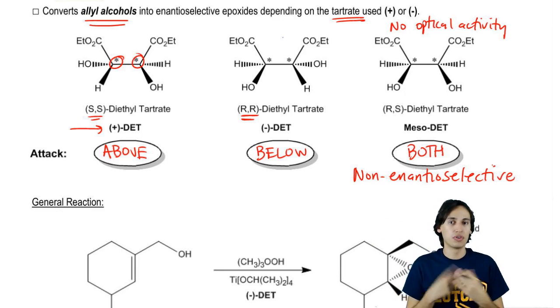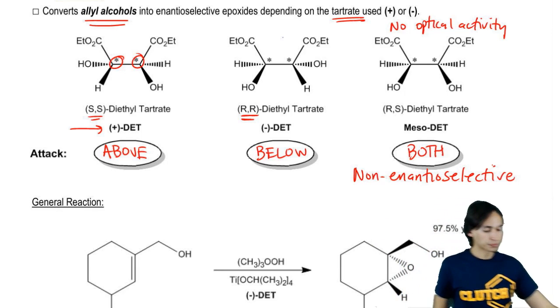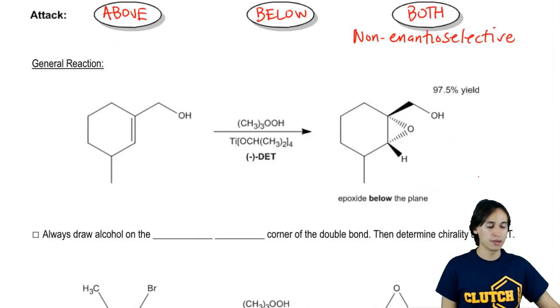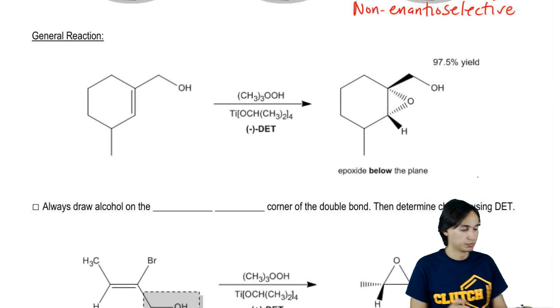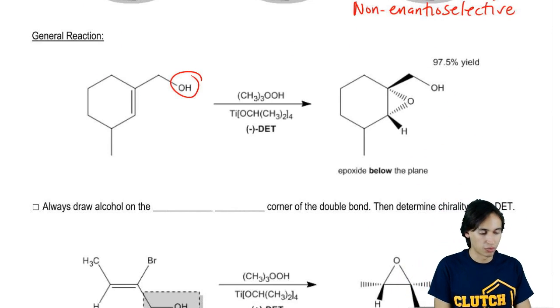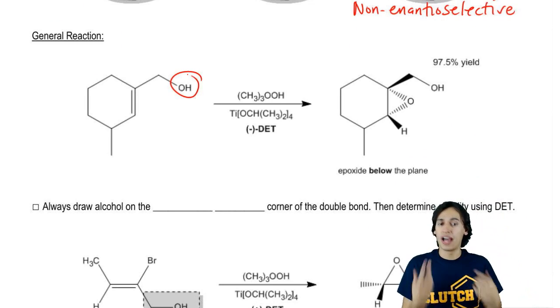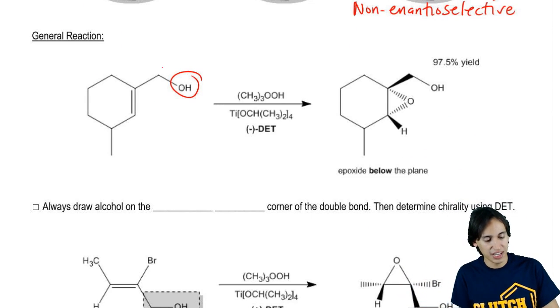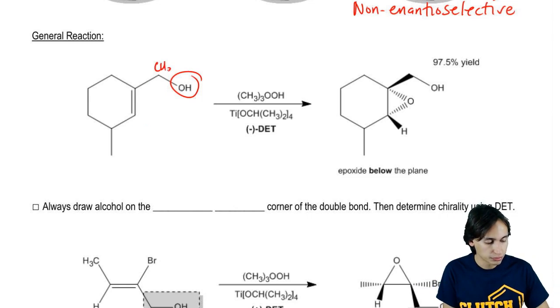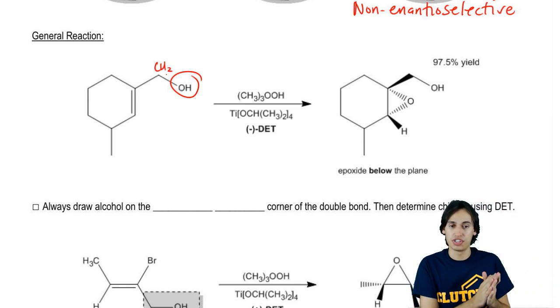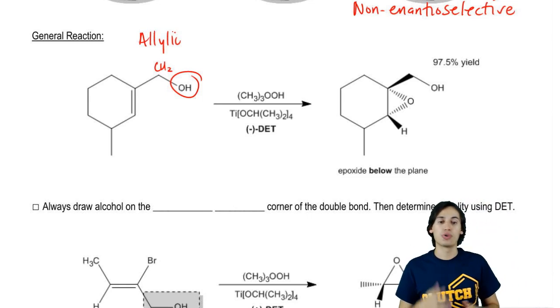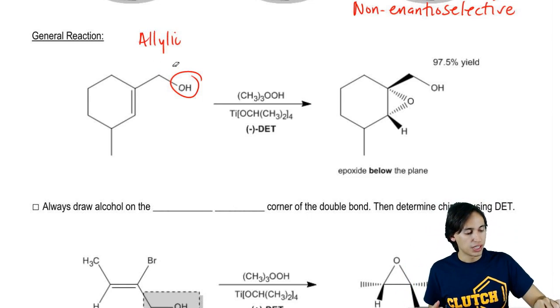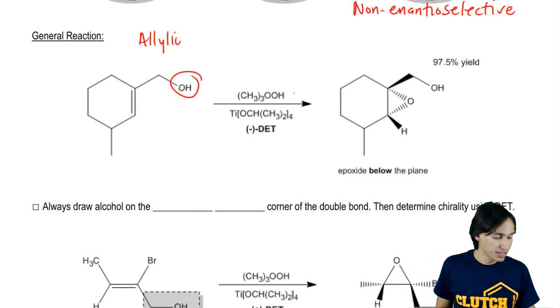So now you're probably wondering, okay, Johnny, how does this actually look in a reaction? Well, here's the general reaction. So here, as you'll notice, I have an allyl alcohol. This is my allyl alcohol right here. The reason we call it allyl is because it is next to a double bond. It has a CH2 and then it has an OH. So this is allylic. That's a position word.